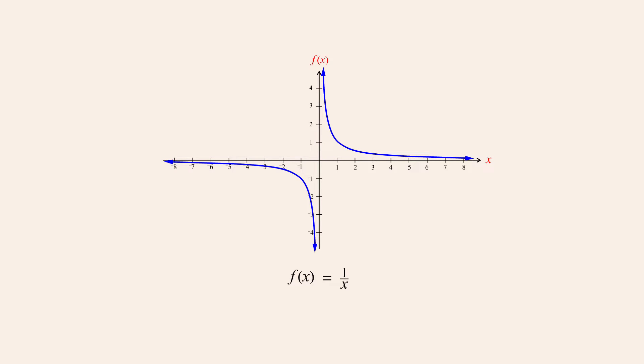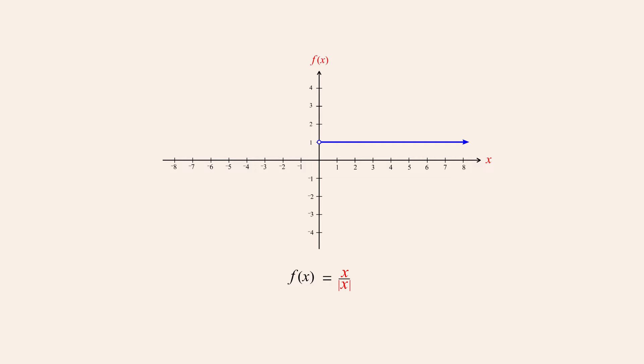Another way that a function can be discontinuous is for a finite jump to occur in its graph. For example, consider the function x divided by the absolute value of x. When x is positive, the value of x and its absolute value are the same, so x divided by its absolute value is one. When x is negative, x and its absolute value have the same magnitude but opposite signs, so x divided by its absolute value is negative one. When x is zero, x and its absolute value are both zero, and since zero divided by zero is undefined, the function's domain includes all values of x except zero.